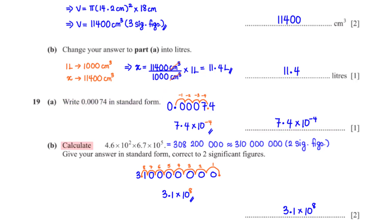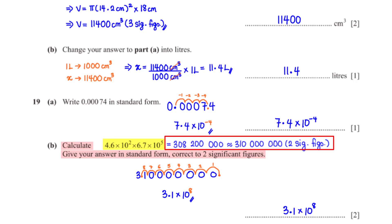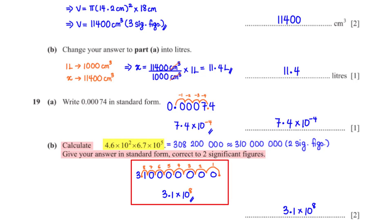Calculate (4.6 × 10²) × (6.7 × 10⁵). Give your answer in standard form correct to two significant figures. Typing this into the calculator gives 310,000,000. To write in standard form, move the decimal 8 places to the left after the first non-zero digit, giving 3.1 × 10⁸.